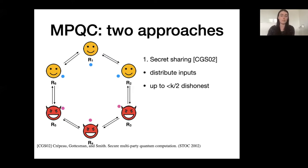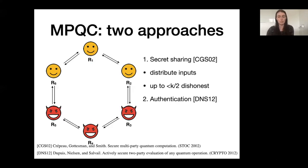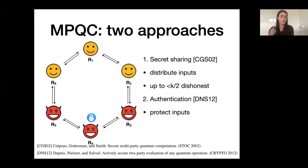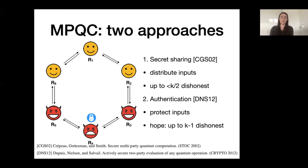There is a second different approach that does not have this limitation — it is based on quantum authentication codes. The idea is that instead of distributing the input, the players encode their input into an authentication code so that it can be sent freely around to the other players. Even if a corrupted player holds the entire authenticated state, it cannot access or alter its content without being detected. The hope is that with quantum authentication codes we can break the barrier from secret sharing and design a protocol secure up to k minus one out of k dishonest players. This idea was originally proposed in a two-player setting, and now the goal is to expand it to a general k.